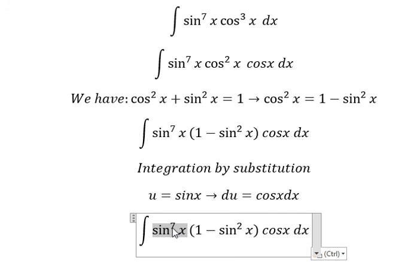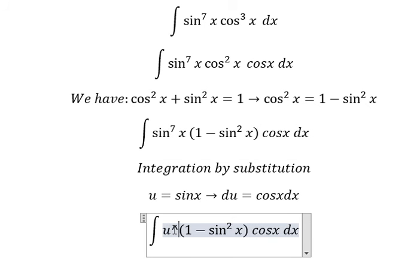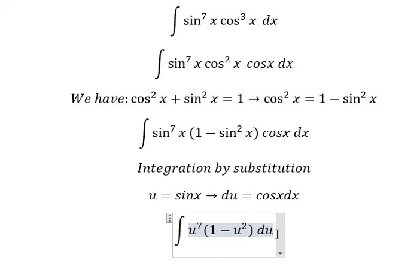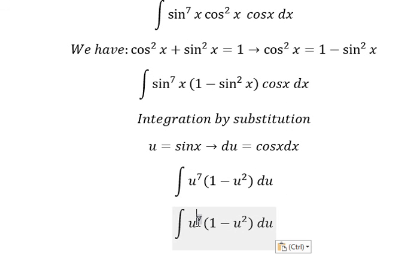We change sin^7x to u^7. The expression (1 - sin²x) becomes (1 - u²). And cosx dx becomes du. So we have u^7 times (1 - u²) du, which expands to (u^7 - u^9) du.